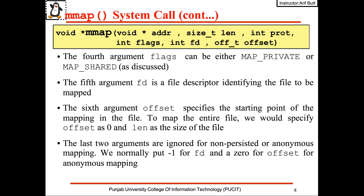The fifth argument fd is the file descriptor defining the file to be mapped. The sixth argument offset specifies the starting point of the mapping; to map the entire file, specify offset as 0 and len as the file size. For a non-persisted or anonymous mapping, put -1 for fd and 0 for offset.